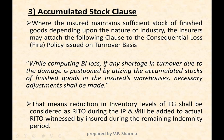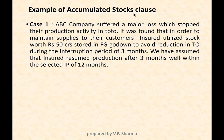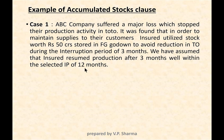This means the reduction in inventory level of finished goods shall be considered as a reduction in turnover during the indemnity period, and it shall be added to the actual reduction in turnover witnessed by the insured during the remaining indemnity period. In Case 1, ABC Company suffered a major loss stopping production completely, but maintained supplies by utilizing stocks worth 50 crores from their finished goods godown for three months within their 12-month indemnity period.